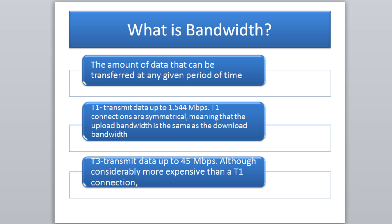When talking about bandwidth, we have T1 and T3 connections. A T1 connection transmits at 1.54 megabits per second — not extremely fast, but decent for most connections where you don't have servers running. T1 connections are symmetrical, meaning the upload bandwidth equals the download bandwidth — both are the same speed.